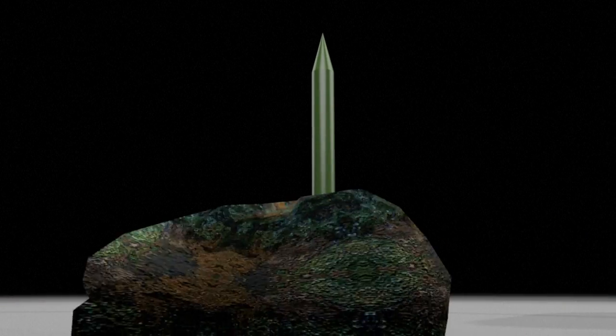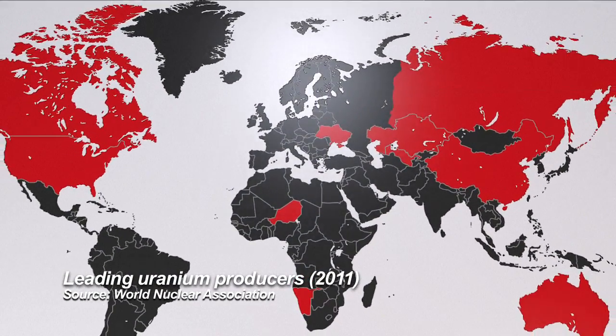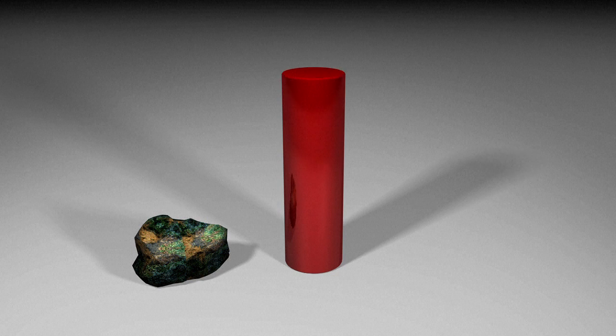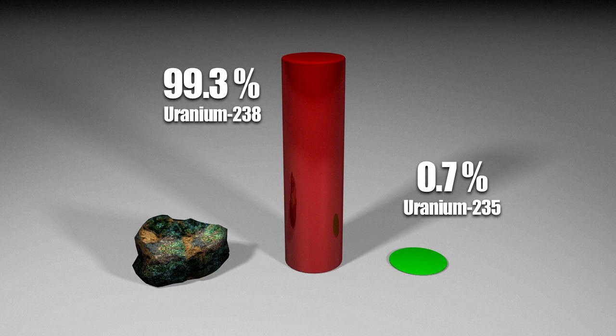Uranium is one option. Commercially available, it also occurs naturally. However, it's made up of two isotopes. 99.3% is Uranium-238 and 0.7% is Uranium-235. Only the latter is used to produce nuclear energy.